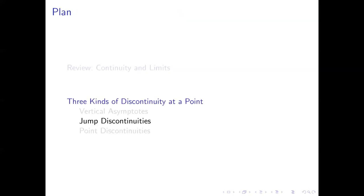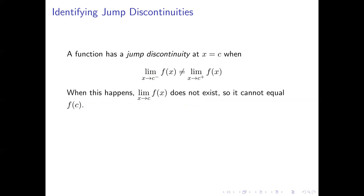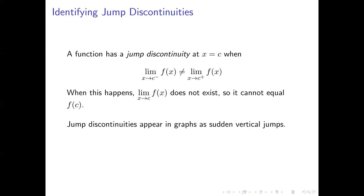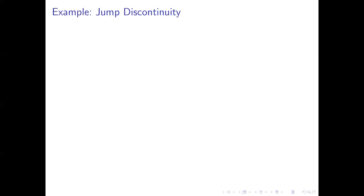Let's turn to a less familiar type of discontinuity: a jump discontinuity. We have one of these at x equals c when the limit as x approaches c from the left does not equal the limit as x approaches c from the right. When these two one-sided limits disagree, the ordinary limit doesn't exist and so it can't be equal to f of c, making our function discontinuous at x equals c. These typically appear in piecewise defined functions, usually at places where the function behavior switches to a different piece of the definition.